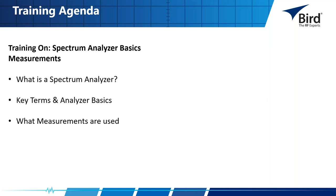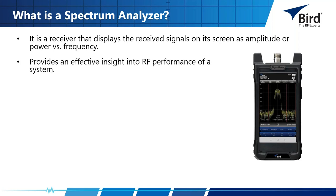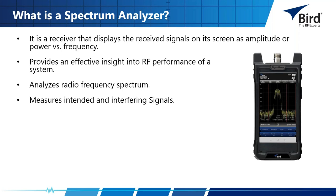On the agenda today we'll talk about our spectrum analyzer basic measurements. We'll discuss what is a spectrum analyzer, go over some key terms and analyzer basics, and what measurements are used. A spectrum analyzer is a receiver that displays the received signals on its screen as amplitude or power versus frequency. It provides an effective insight into RF performance of a system and analyzes the radio frequency spectrum, measuring intended and interfering signals.